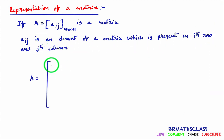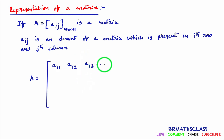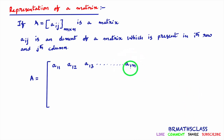Aij is the element present in the ith row and jth column. The element in the first row and first column is denoted A₁₁. A₁₂ means the element present in the first row and second column. A₁₃ means first row, third column. For a matrix with m rows and n columns, A₁ₙ represents the element in the first row and nth column. A₁₃ means element present in first row and third column.